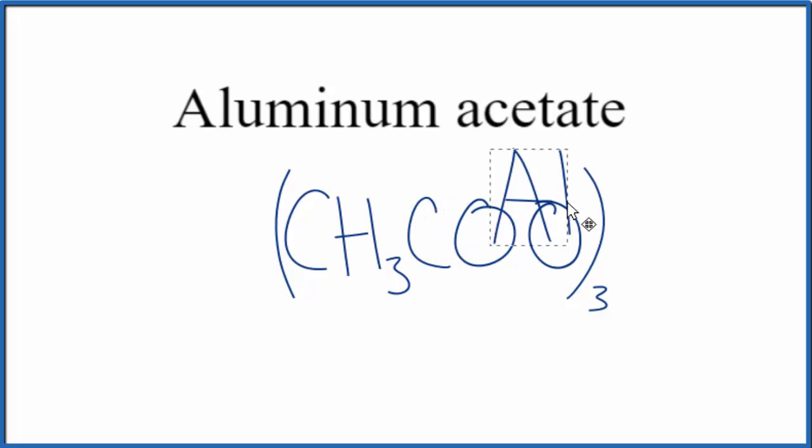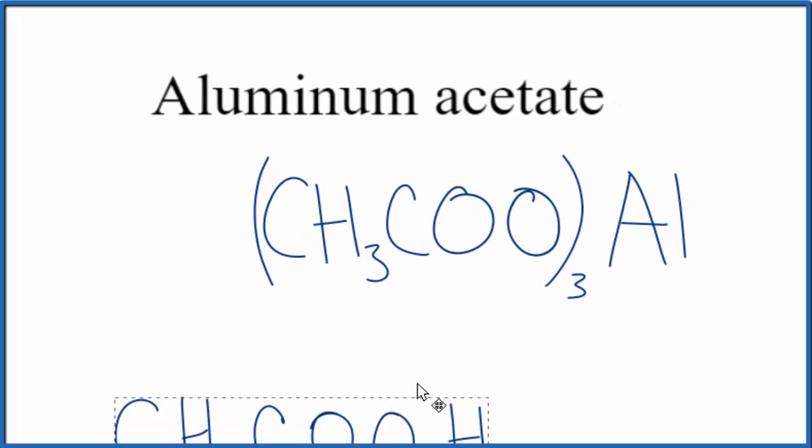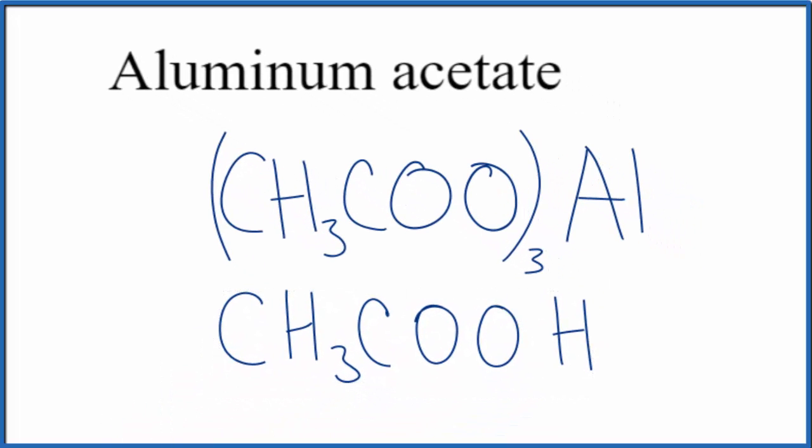Sometimes you'll see this written with the aluminum at the end. The reason that's done is if you look at this, the acetate ion, that comes from acetic acid. In this H here at the end, that's what's involved in the chemical reactions. So you can kind of think of the aluminum replacing the hydrogen. That's why they place the aluminum sometimes after the acetate ion.